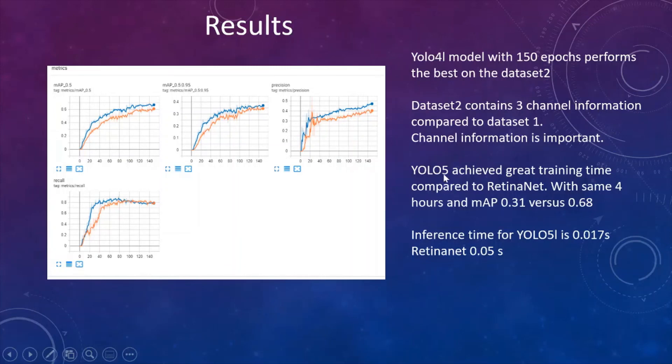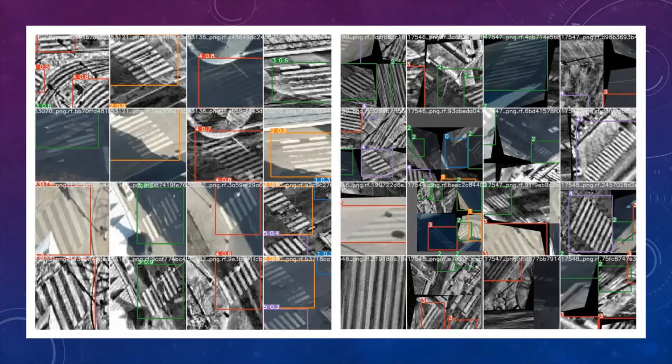YOLO-5 achieved greater training time compared to RetinaNet. With the same four hours, we achieved for RetinaNet only a mean average precision of 0.31. And for YOLO we achieved double of it. So YOLO-5 was our favorite. And also inference time for YOLO was 0.017 seconds. And for RetinaNet 0.05.